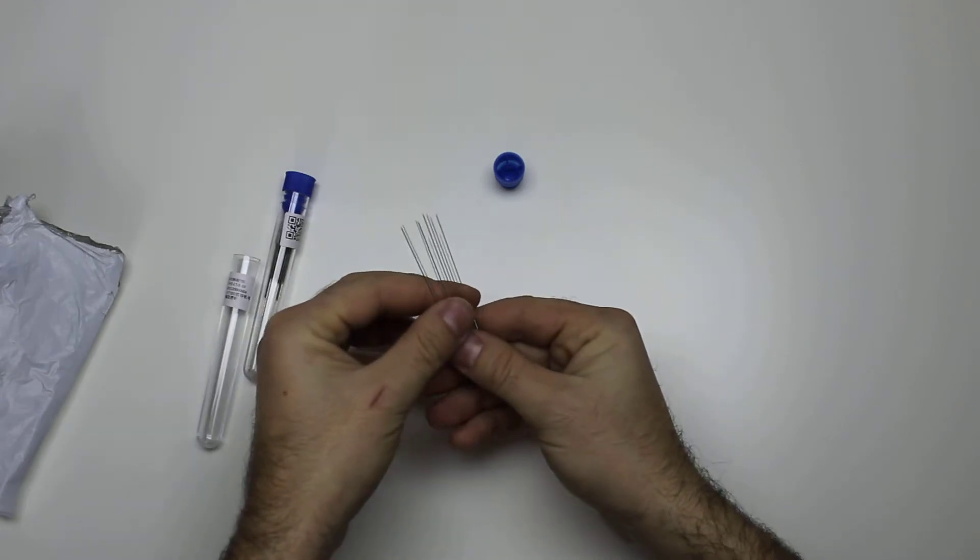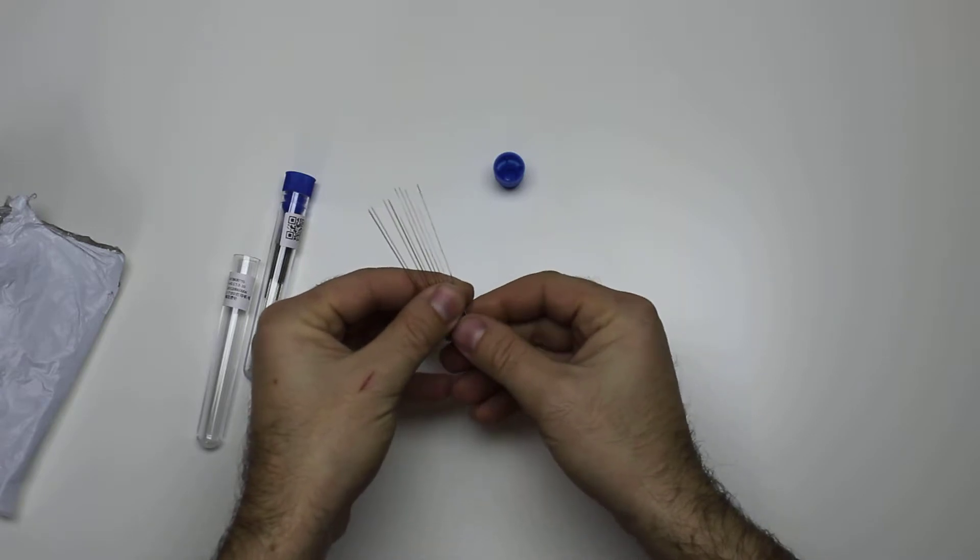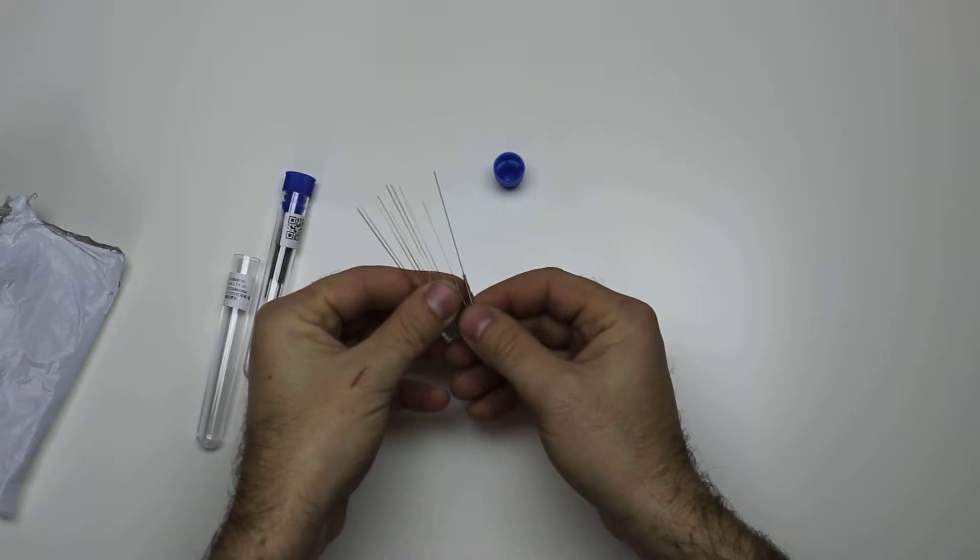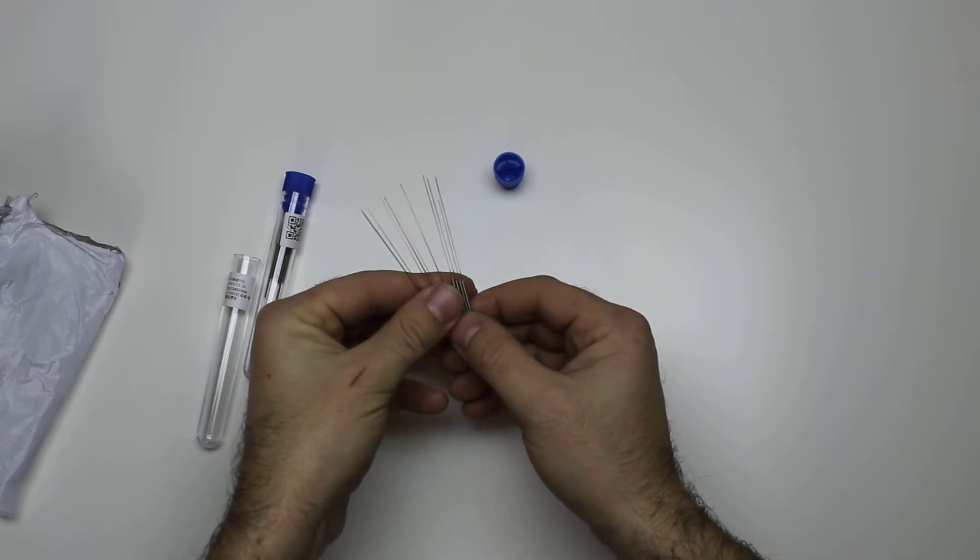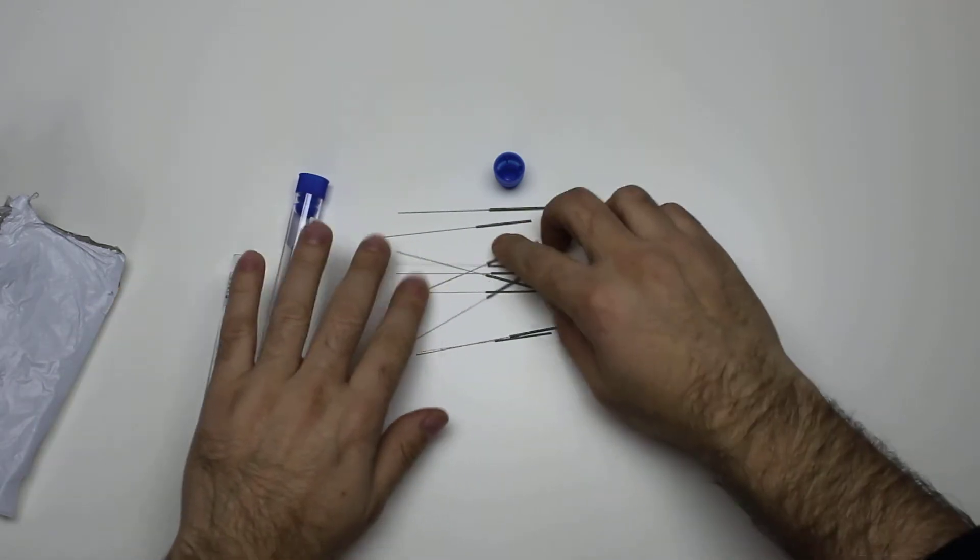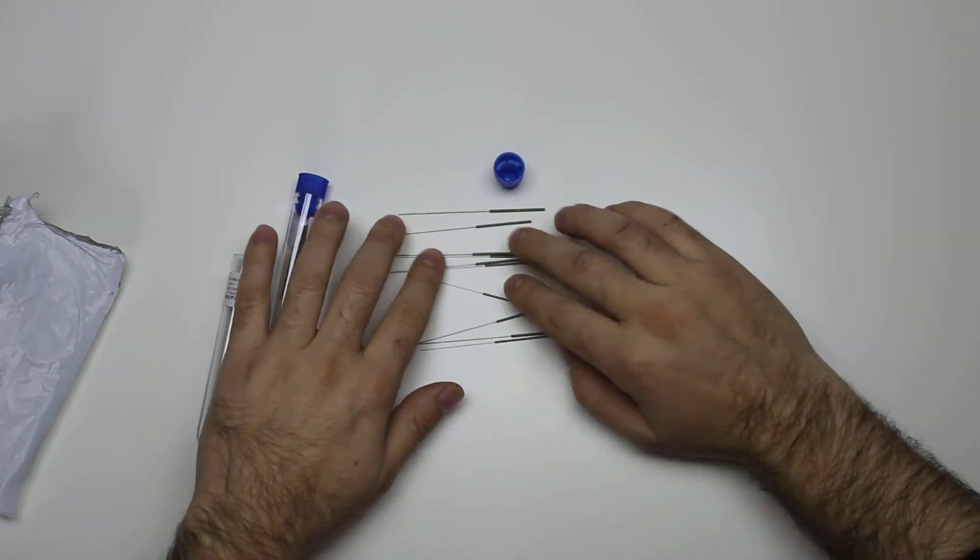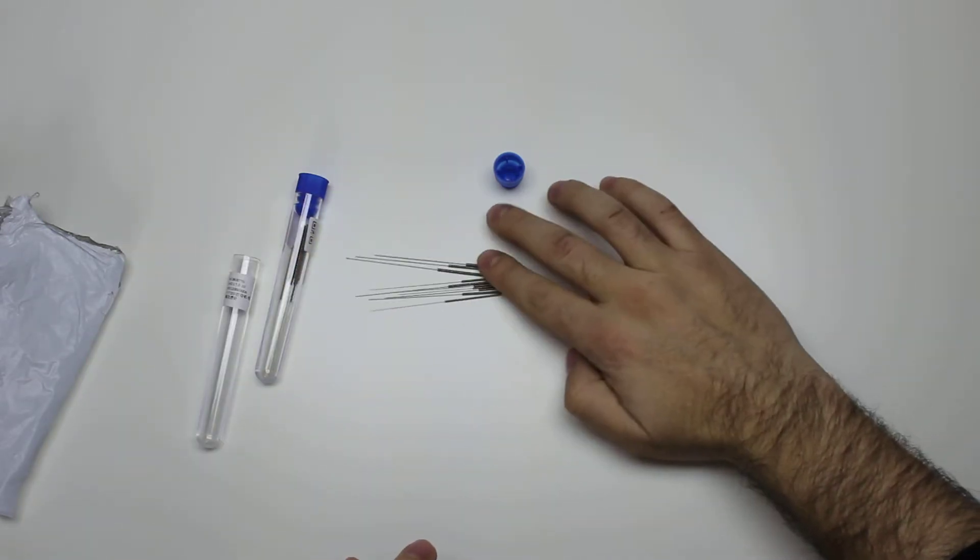They're quite tiny. There should be a total of ten, two of each size. So let's see: one, two, three, four, five, six, seven, eight, nine, ten. Yeah, they're quite tiny. I guess you have to start small and then work your way up until you use the biggest one and clean your 3D printer nozzle.